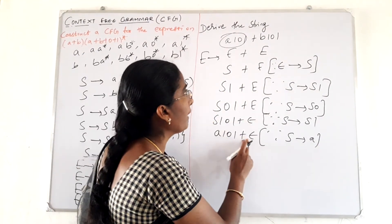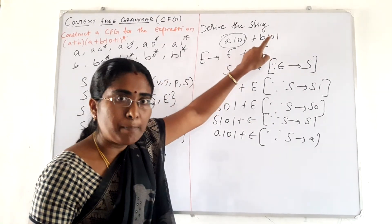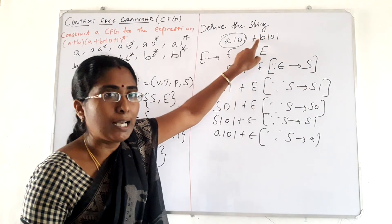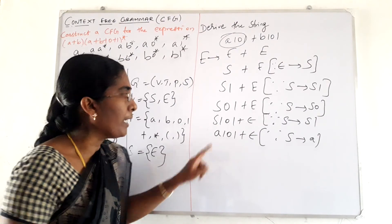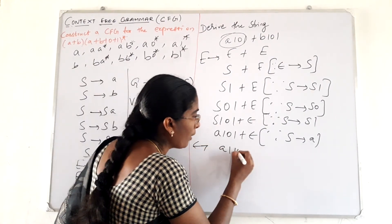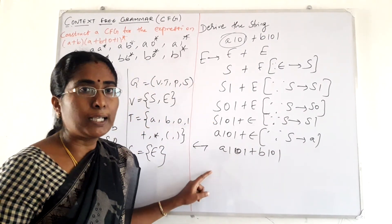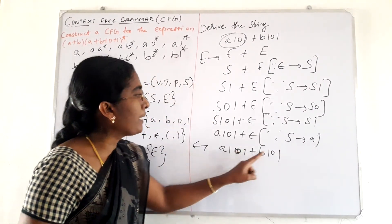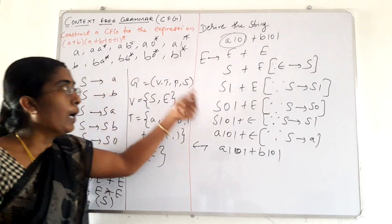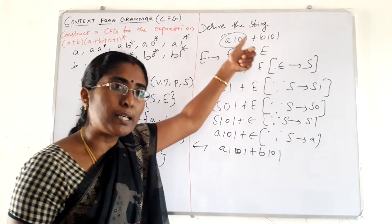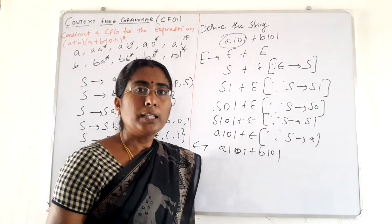Similarly, we replace the second E: first by S, then S implies S1, then S implies S0, then S implies S1, and finally S is replaced by B. This gives B101. So the full derivation yields A101 plus B101. This is how we derive a particular string using a CFG — by replacing productions recursively.